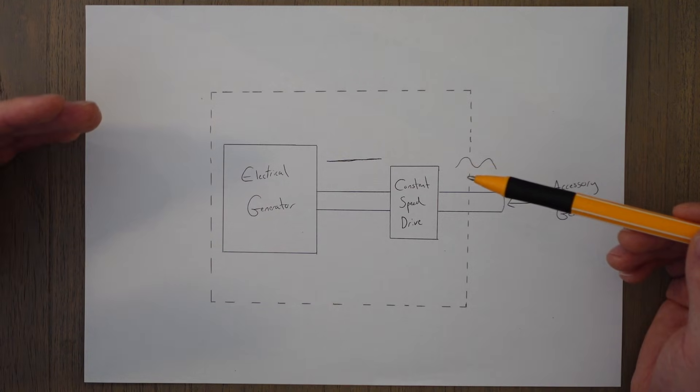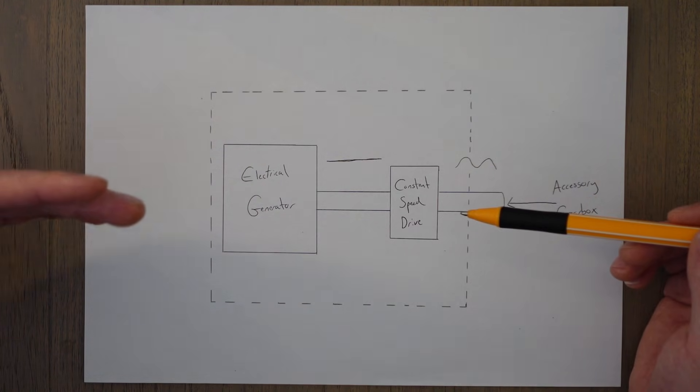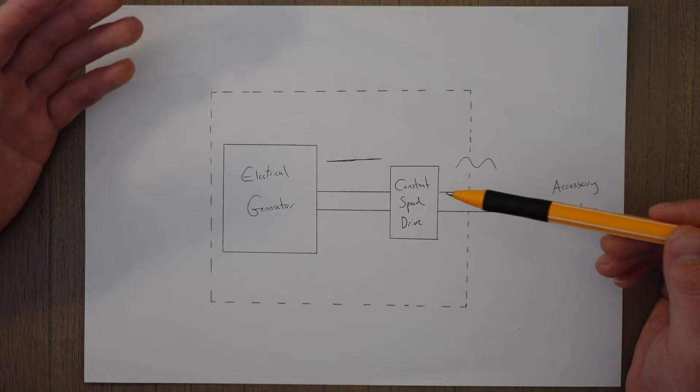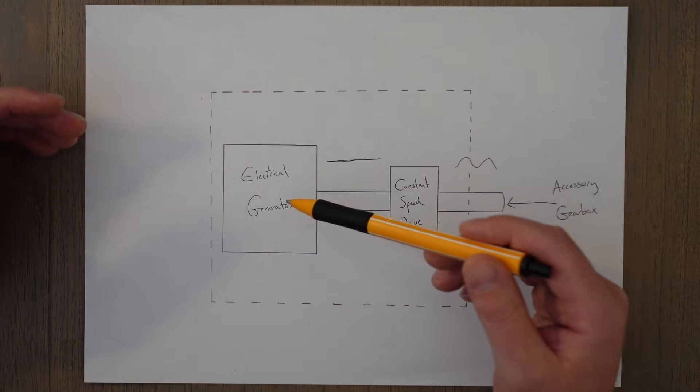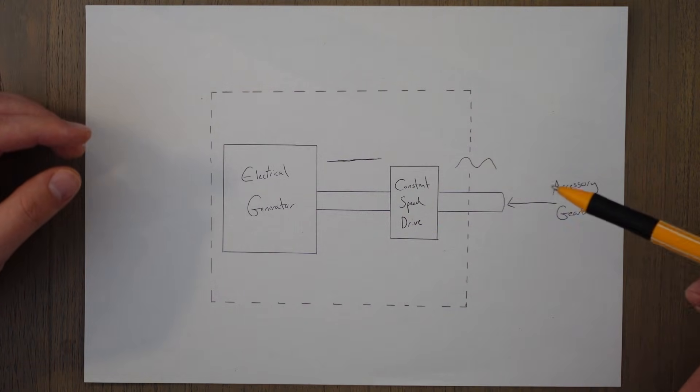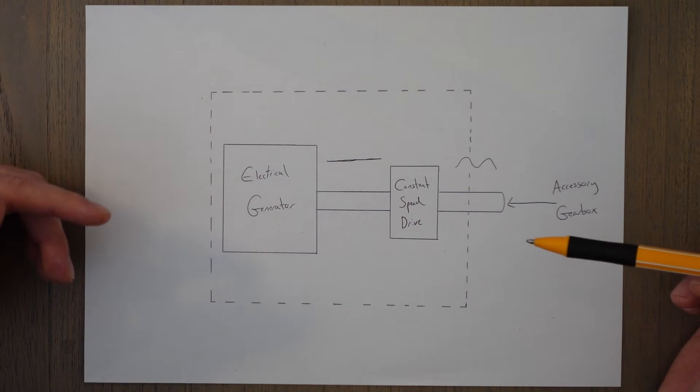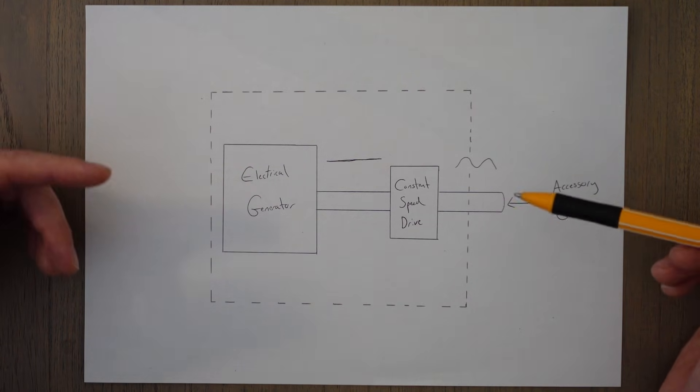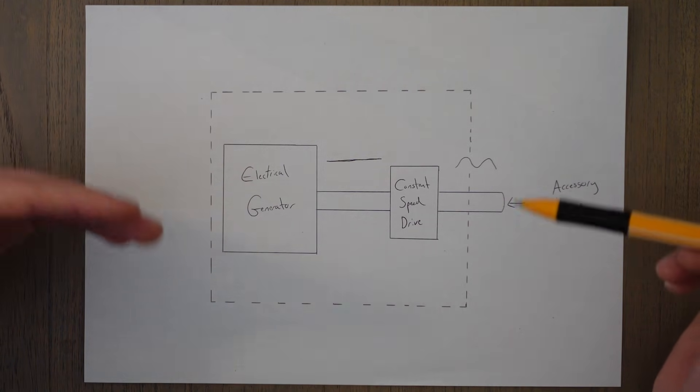Basically, high RPM during takeoff, low RPM when doing a low thrust descent. And if we just connected a generator straight to the gearbox, we would find that the frequency of the electricity generated would vary as well, in line with the RPM of the engine.